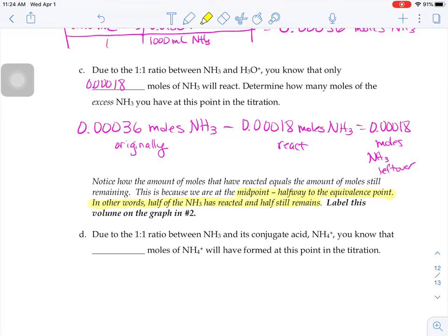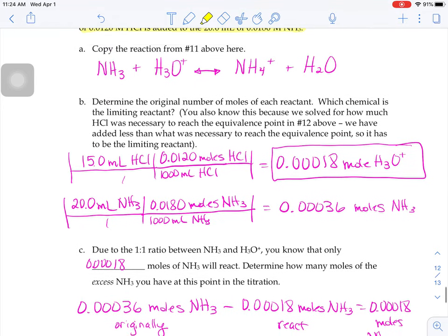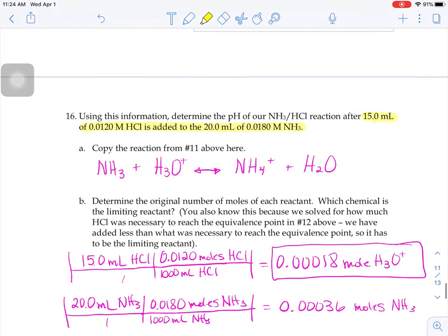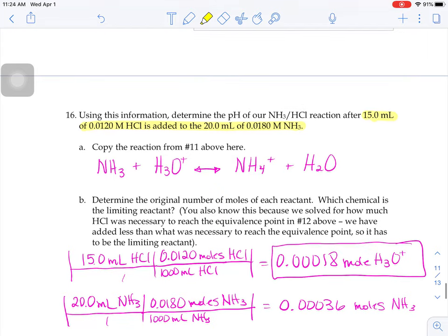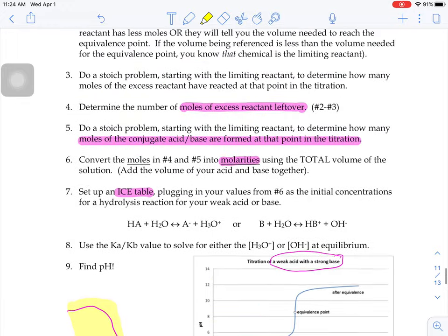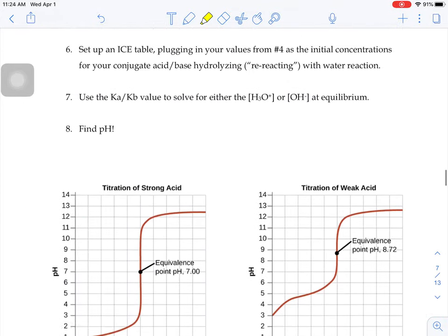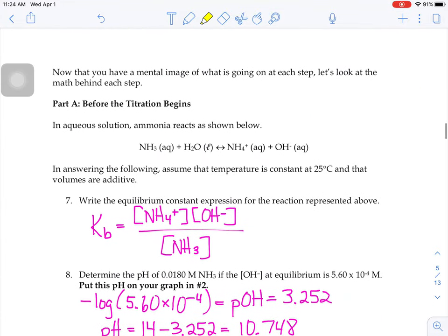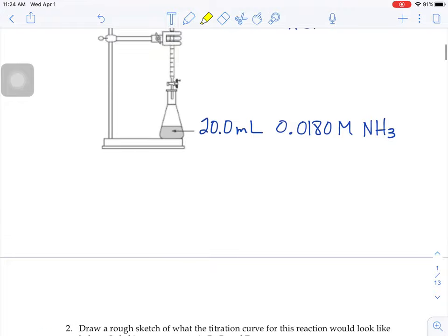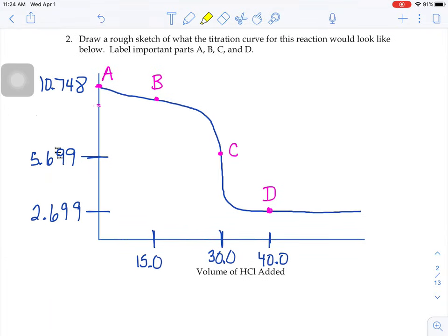It says to label the volume that that takes on graph number two. So the volume of HCl that we've added at this point is 15 milliliters. If you go back to this graph number two, you can see on here, here's that 15 milliliters. It's the halfway point. If it takes 30 milliliters to reach our equivalence point, we need half that volume to be at the midpoint.